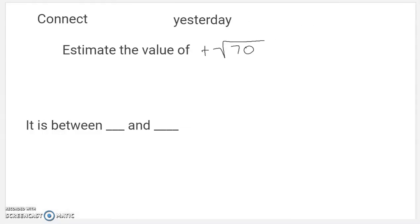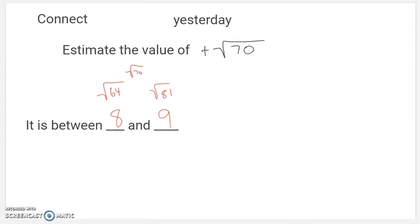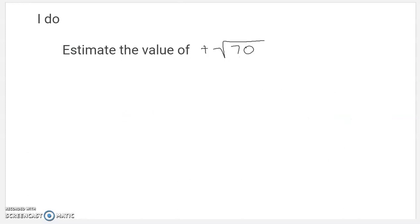And we started first by saying what is it between. So this one was between 8 and 9, because that's the square root of 64, and that's the square root of 81. And then we also tried to get a little more precise and say it's between 8 and 9, but is it closer to one than the other? Is it very close to one or is it close to halfway? And this one, we said, it's 6 away from there, and it's 11 away from 8. That's kind of how we did that yesterday. I want to be a little more precise today.